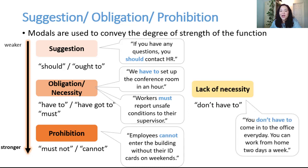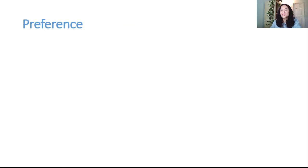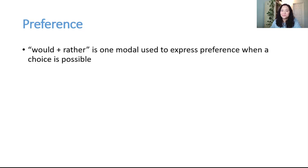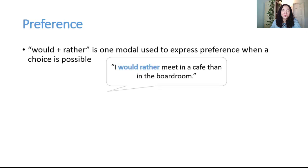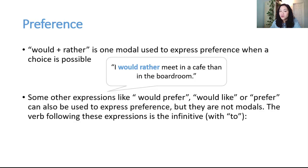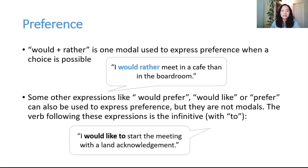Finally, a funny point about the negative of have to, that is don't have to, this modal signifies lack of necessity. You don't have to come into the office every day, you can also work from home. The last function we will cover is preference. One of the ways to express preference is through the modal would. I would rather meet in a cafe than in the boardroom. Some other expressions like would prefer, would like, or prefer can also be used to express preference, but they are not modals. The verb following these expressions is in the infinitive with to. I would like to start this meeting with a land acknowledgement.